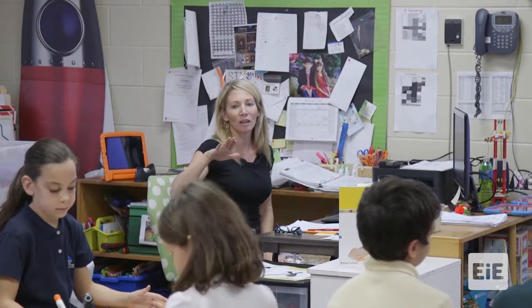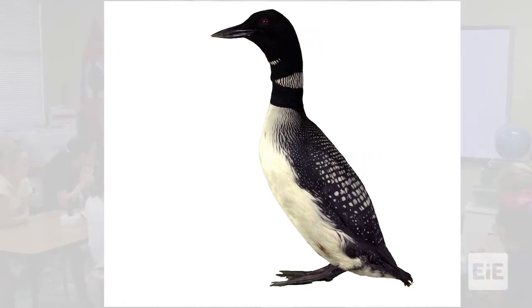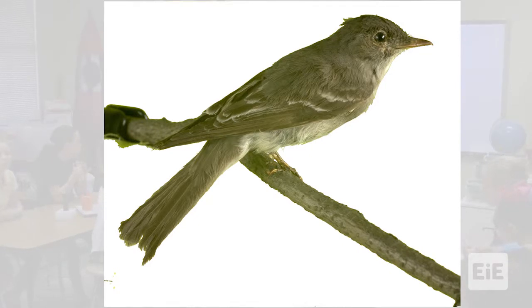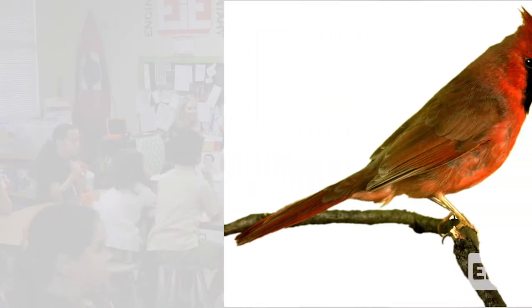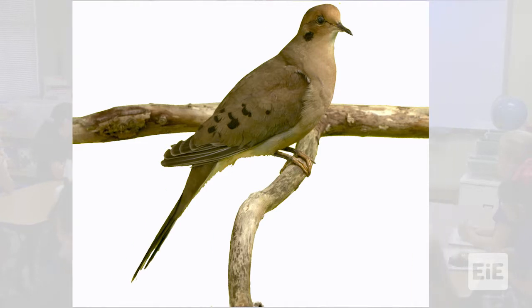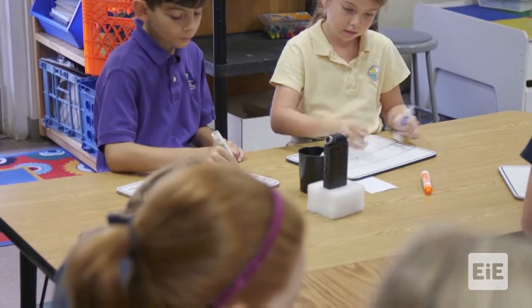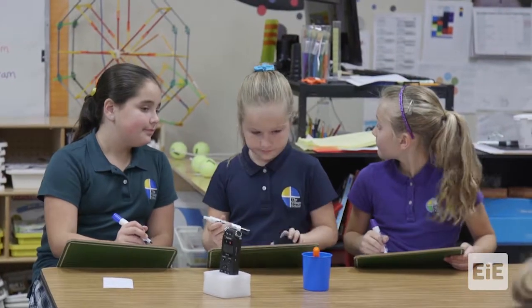The white boards are for your teams to do your imagine stage. Here is the first bird: Common loon. Eastern wood peewee. Northern cardinal. Blue jay. Morning dove. I'm going to give you about another five minutes or so to be with your teams to discuss, plan, to imagine, before we start to create.